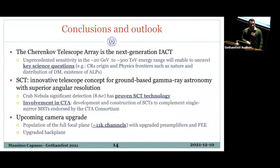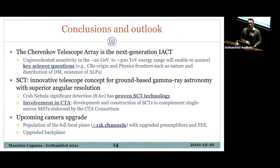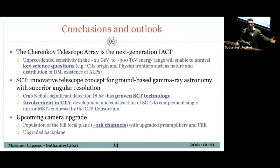The Cherenkov Telescope Array is going to provide unprecedented sensitivity over a much wider energy range than current instruments. It will be a key instrument for gamma-ray astronomy, complementing currently operating facilities like LHAASO and planned facilities like SWGO. The U.S. is heavily involved in CTA, particularly with the construction of the SCT, which we are looking to upgrade in the immediate future.